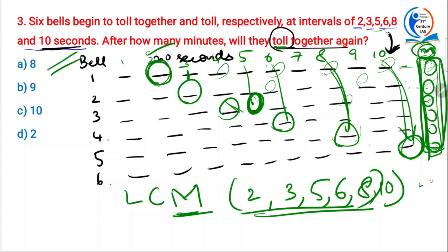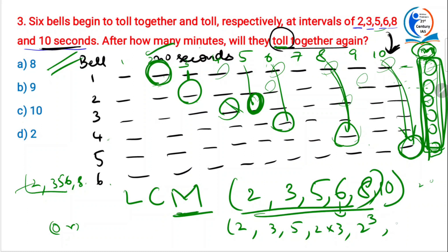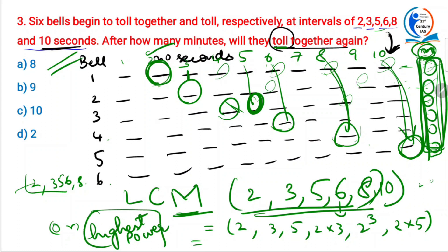Now calculate the LCM of 2, 3, 5, 6, 8 and 10. Write them as: 2, 3, 5, 2×3, 2³, and 2×5. To find LCM, take the highest power of each prime number. The highest power of 2 present is 2³, highest power of 3 is 3¹, and highest power of 5 is 5¹. Keep this in your brain — why highest power? Because we are calculating the multiple.